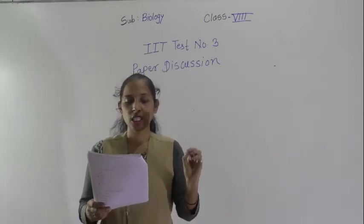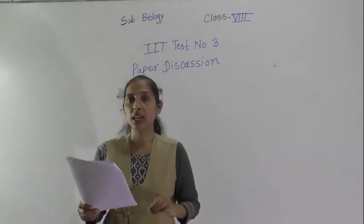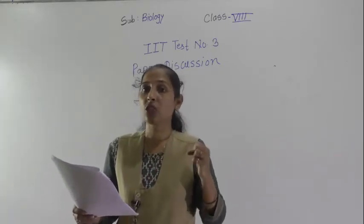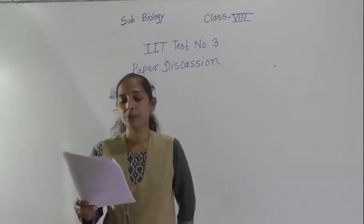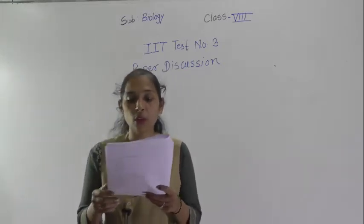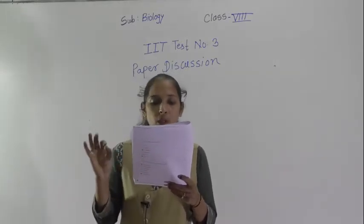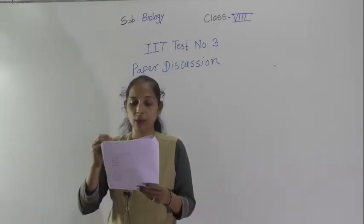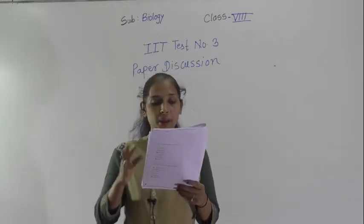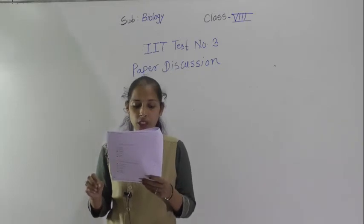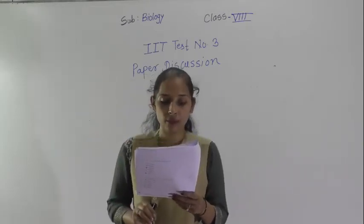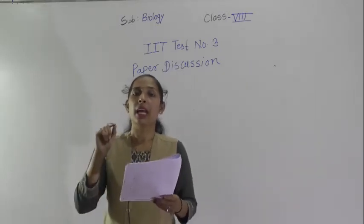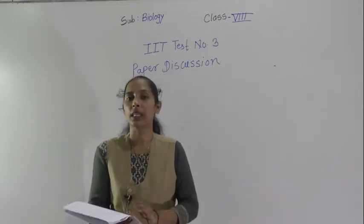Question number 6: genes are located in the nucleus. All these are the genetic material which is present inside the nucleus. Question: which of the following combinations are present in plant cell but not in animal cell? The correct option is option A — cell wall and plastids. Cell wall is present only in the plant cell, and also plastids are present only in the plant cell.